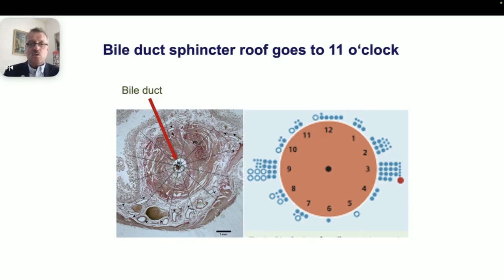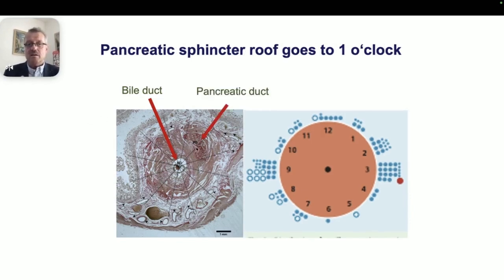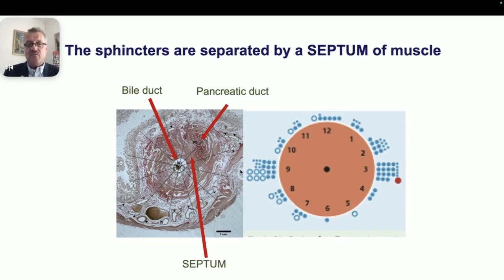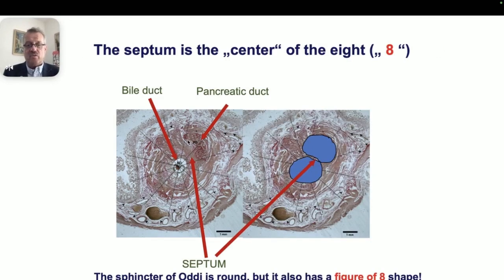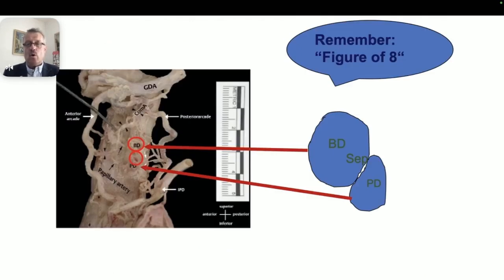The bile duct goes towards 11 o'clock, and the pancreatic duct goes towards 1 o'clock. The bile duct has a figure-of-8 configuration — not round as most of us learned in medical school, but a figure-of-8 muscular shape with a septum in the middle. It's important to understand this shape and the directions of the cut: towards 11 for bile duct sphincterotomy, and towards 1 for pancreatic duct sphincterotomy.